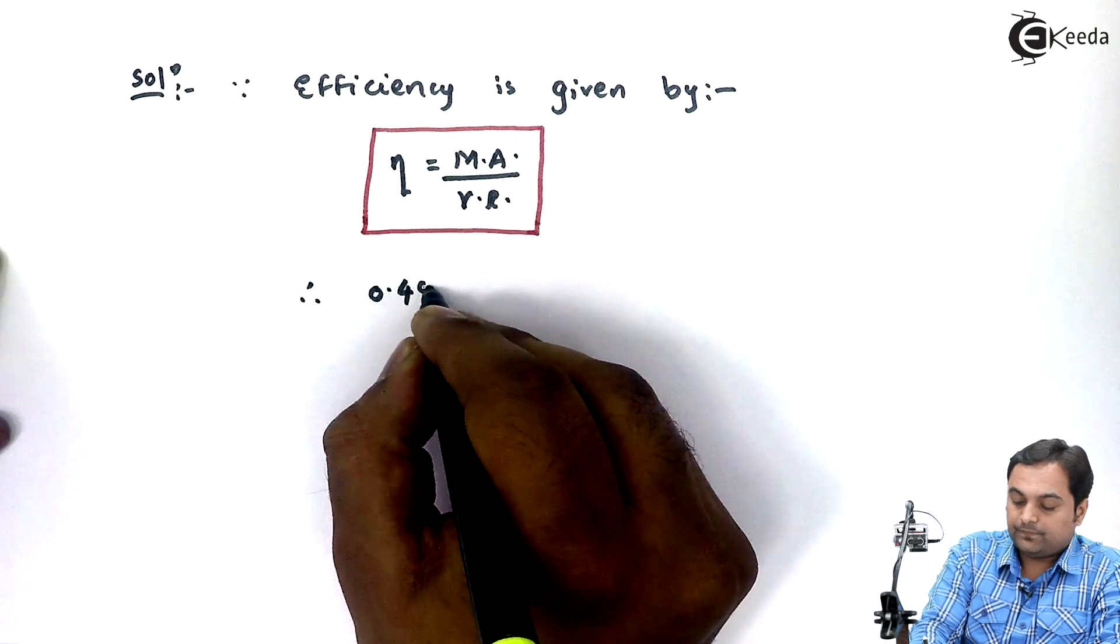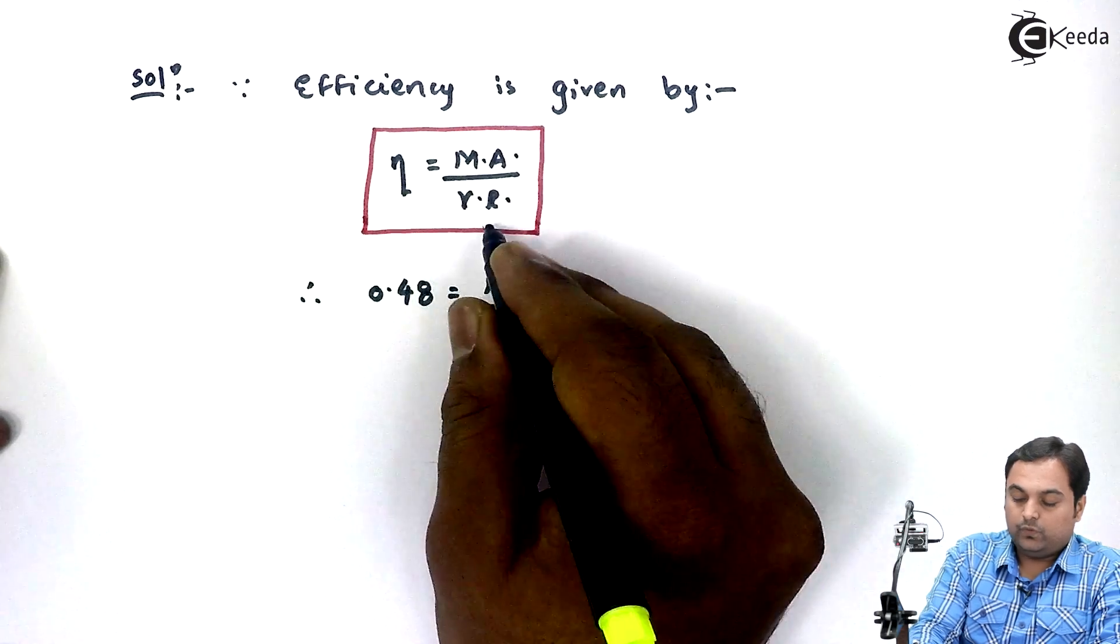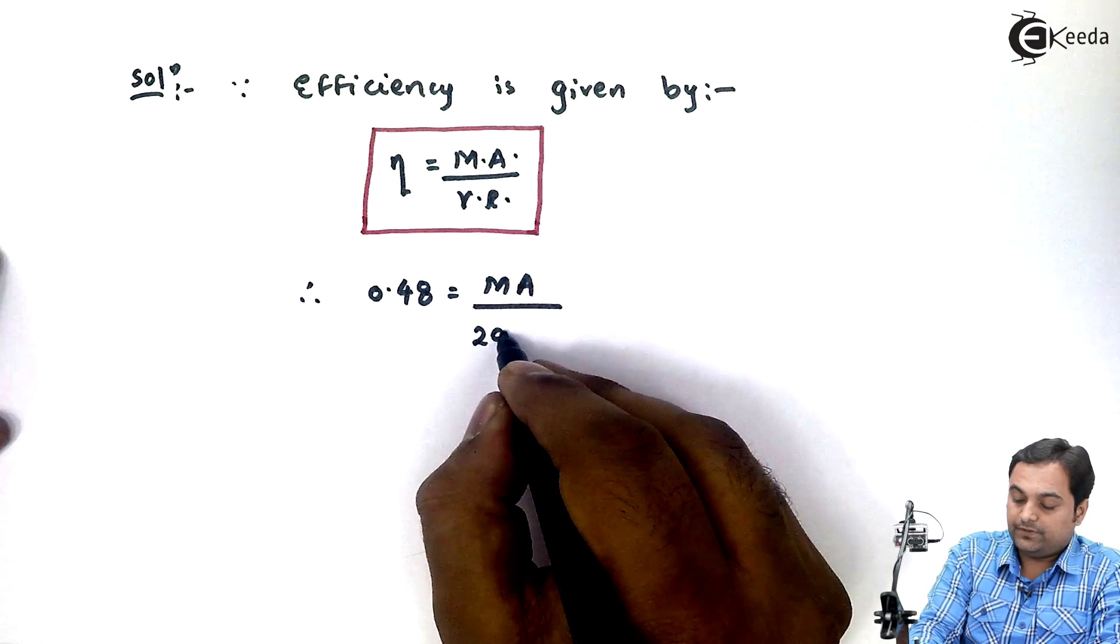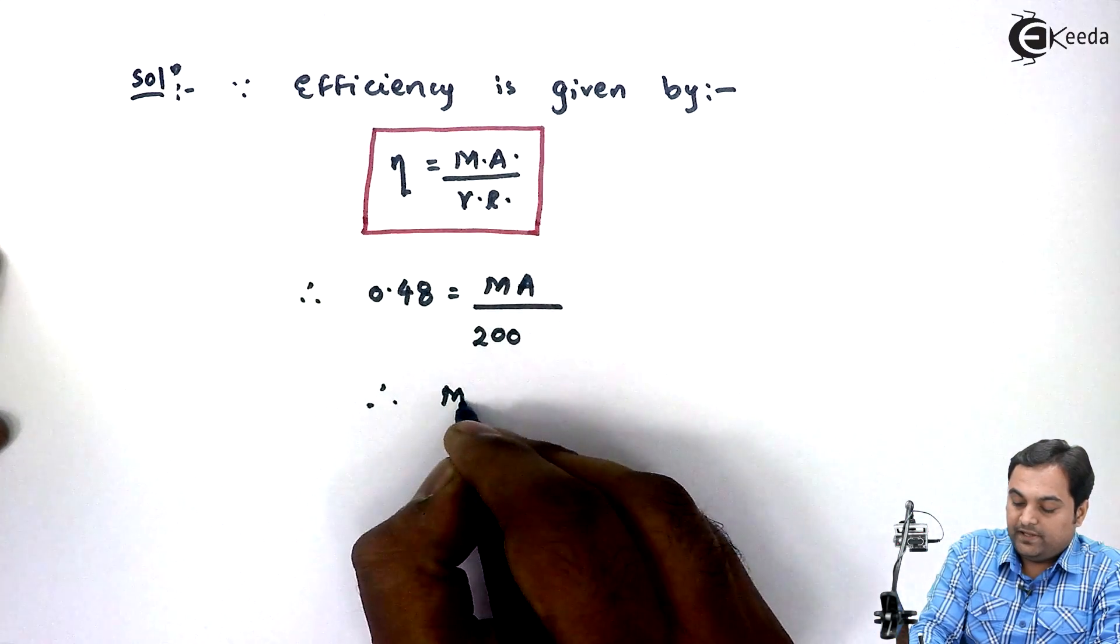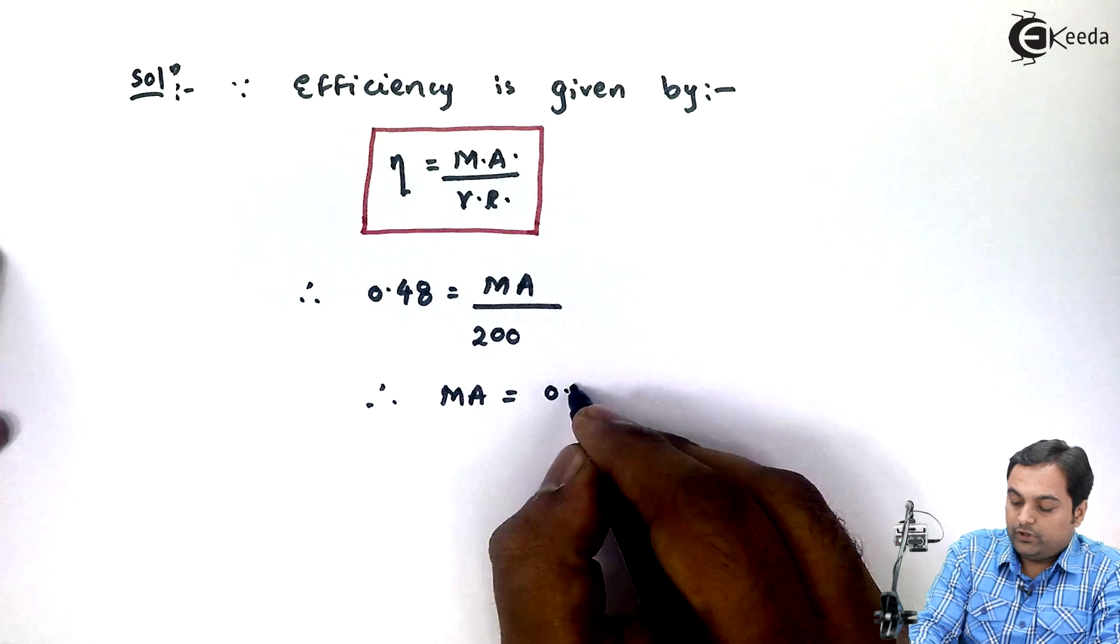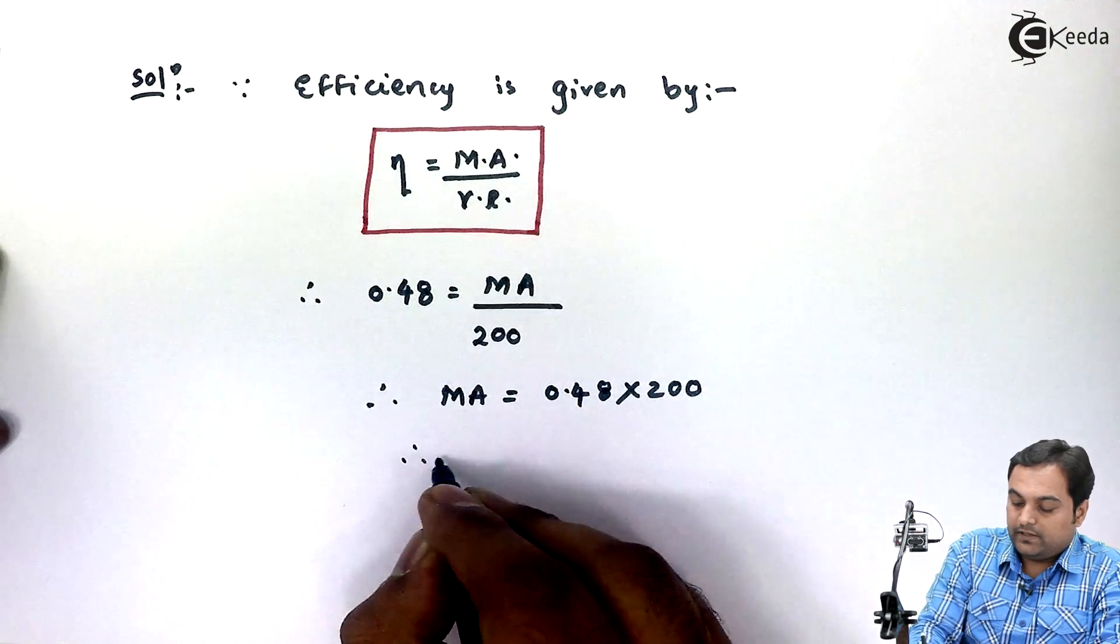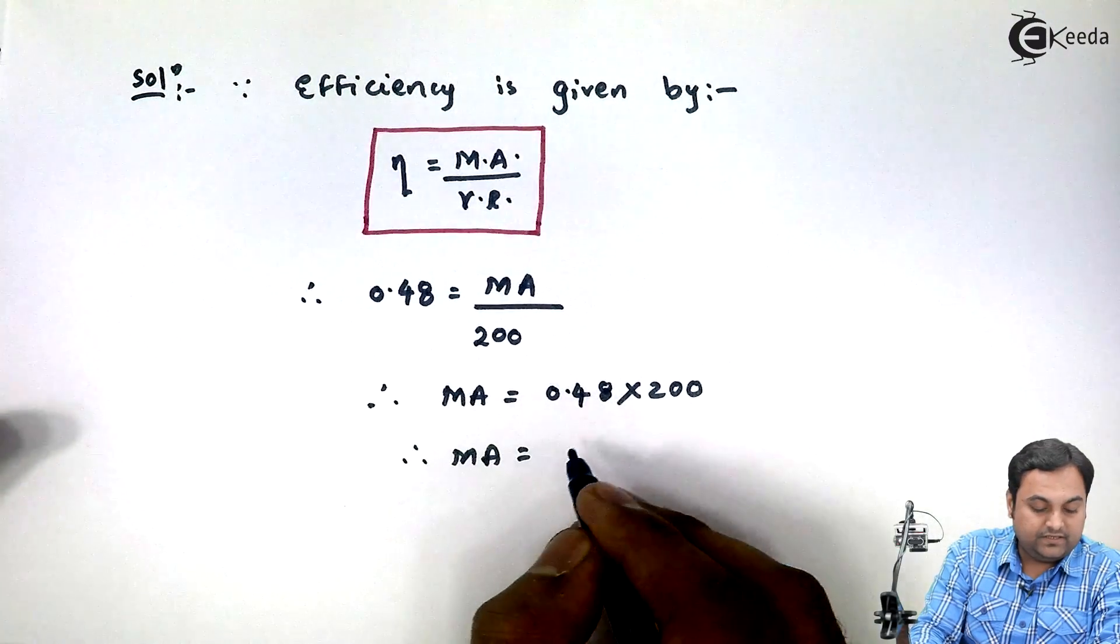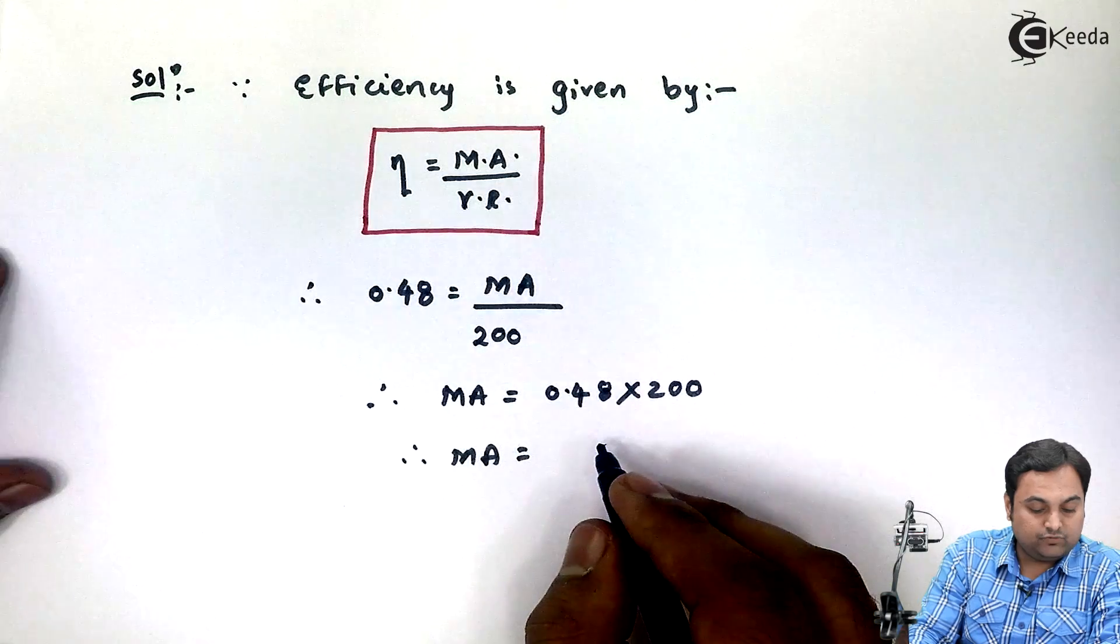From this we will get mechanical advantage first. Therefore, MA equals 0.48 times 200, and the MA answer is 96. This comes out to be 96.